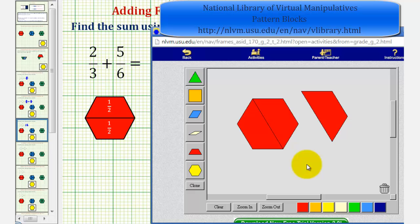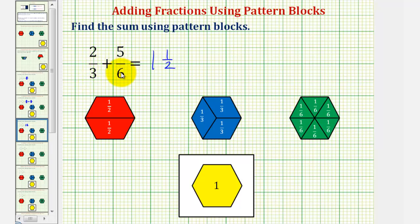So we could also express this sum as three-halves. Which means two-thirds plus five-sixths equals one-and-a-half, which also equals three-halves.